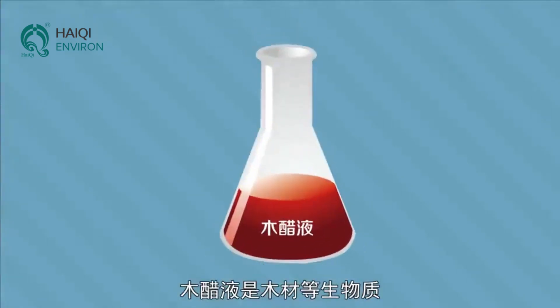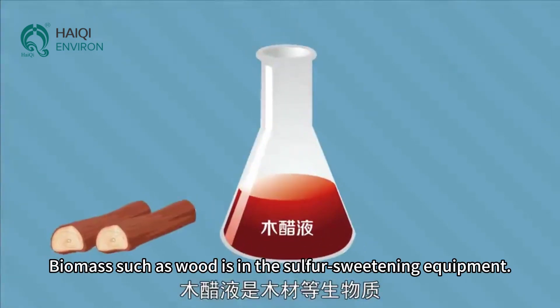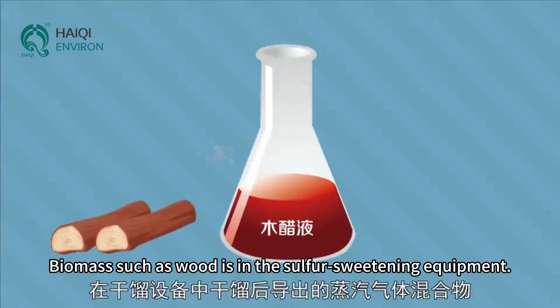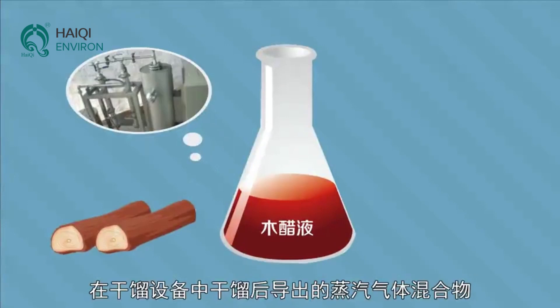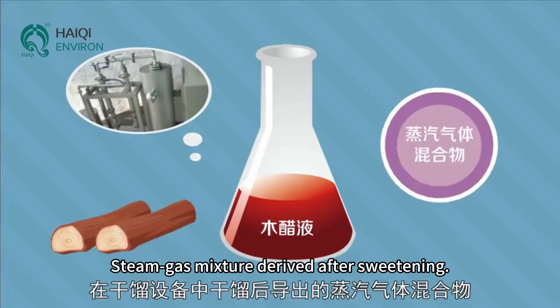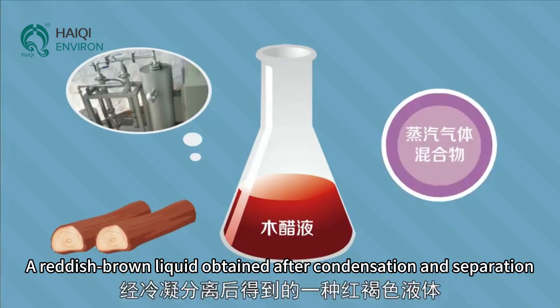Wood vinegar. Biomass such as wood is processed in the sulfur sweetening equipment. The steam-gas mixture derived after sweetening produces a reddish-brown liquid obtained after condensation and separation.